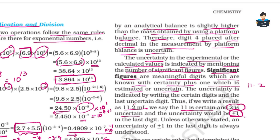The last digit may be plus or minus one — it may change. Unless otherwise stated, an uncertainty of plus or minus one in the last digit is always understood.